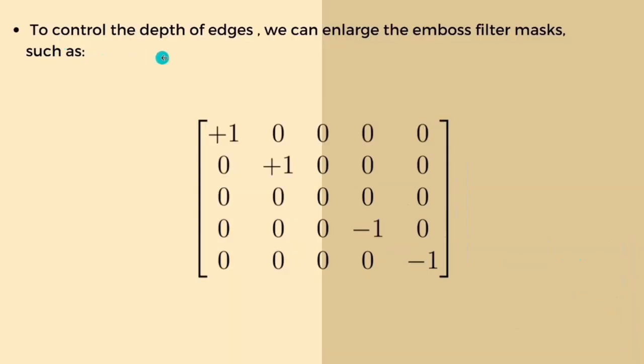To control the depth of edges, we can enlarge the embossed filter mask, such as a 5x5 matrix. An example of this is shown in this slide.